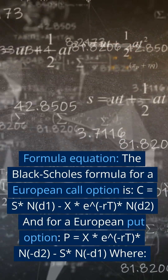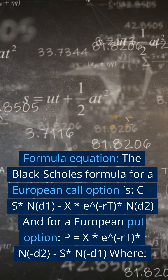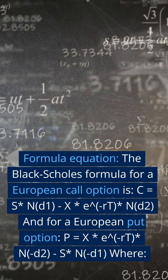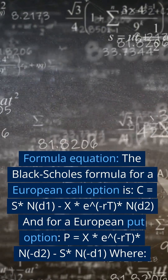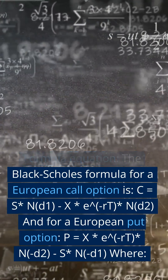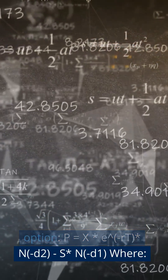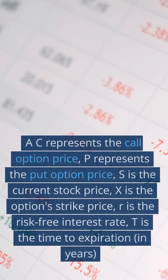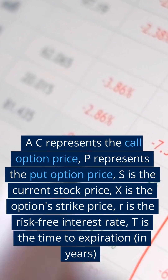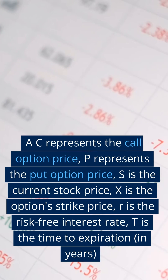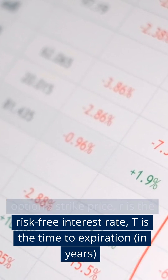The Black-Scholes formula for a European call option is: C = S × N(D1) − X × e^(−RT) × N(D2). For a European put option: P = X × e^(−RT) × N(−D2) − S × N(−D1). Where C represents the call option price, P represents the put option price, S is the current stock price, X is the option strike price, R is the risk-free interest rate, and T is the time to expiration in years.